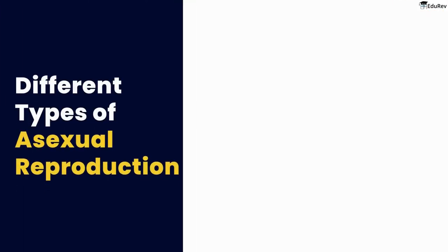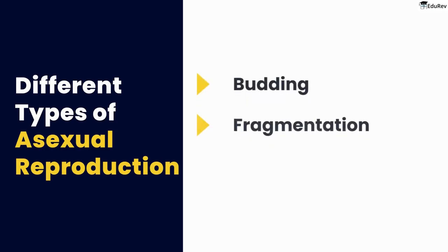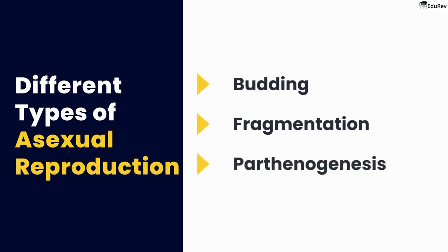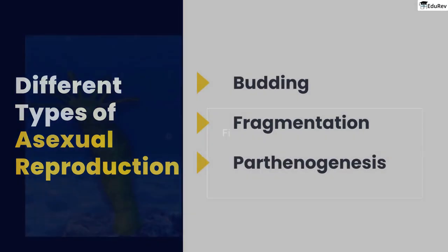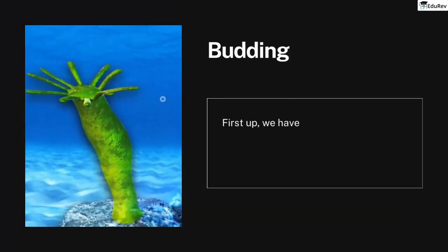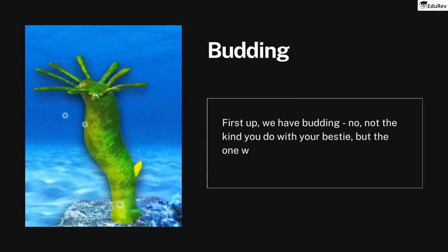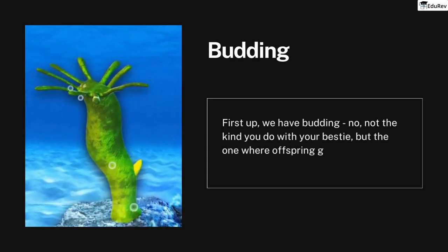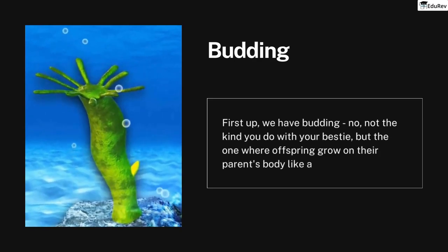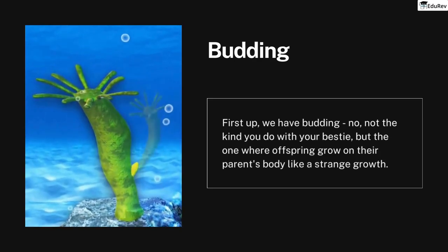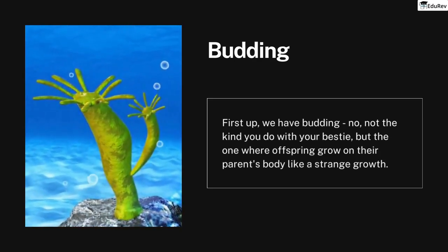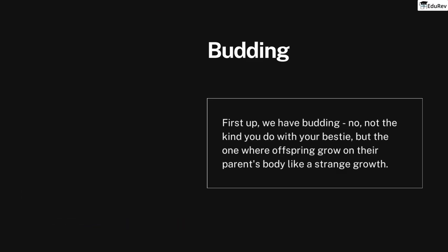Let's explore the different types of asexual reproduction. It can take various forms, including budding, fragmentation, and parthenogenesis. First up, we have budding — not the kind you do with your best friend, but the one where offspring literally grow on their parent's body. To understand how budding works, let's take the example of a hydra.